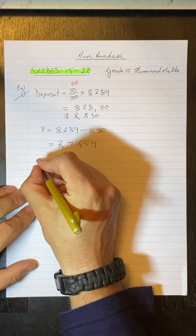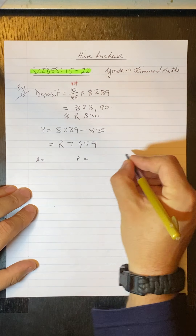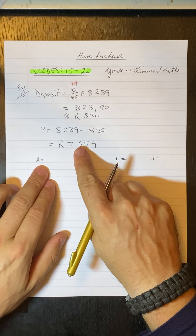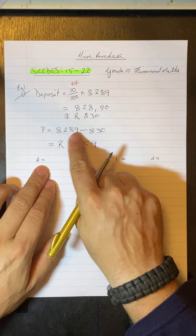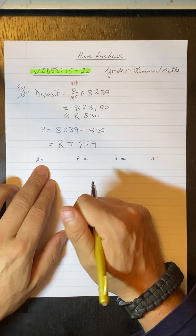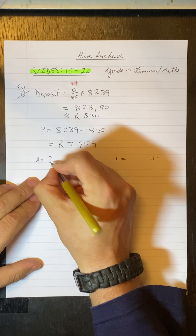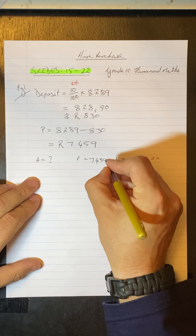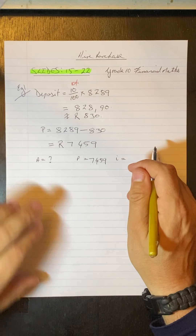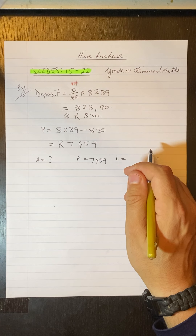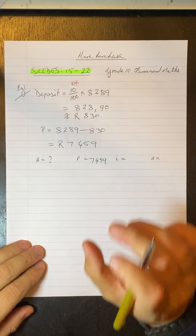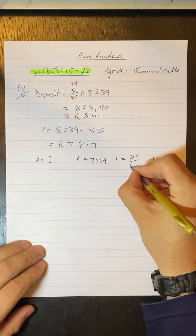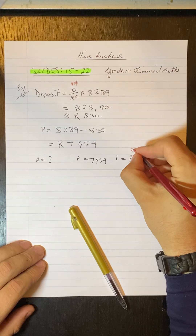Now we're going to set up our A, P, I, and N, because this is the loan amount and we want to find the interest on it. Our accumulated amount A we don't know. Our principal amount P is R7,459. Our interest rate I is 21.5% so that's 21.5/100.